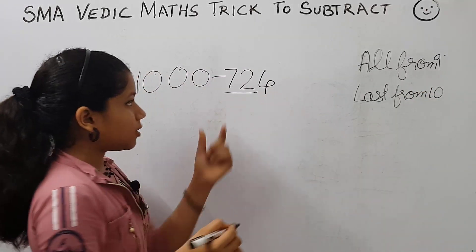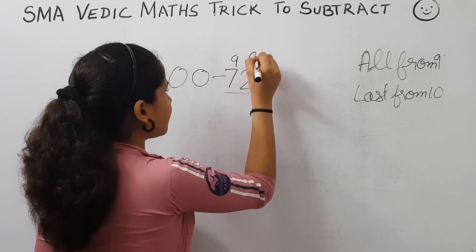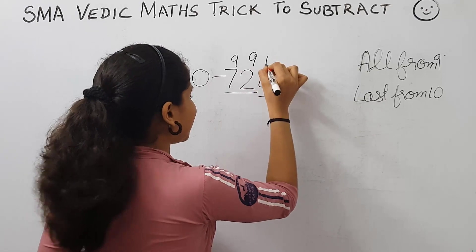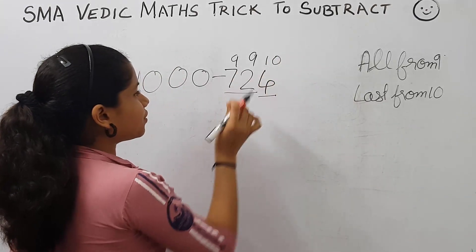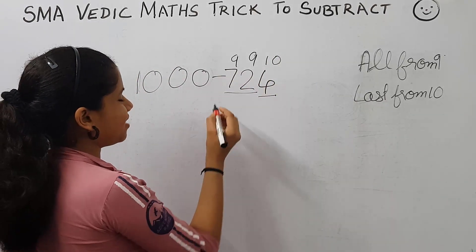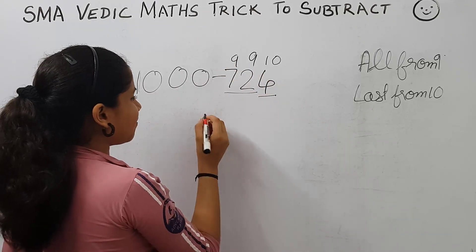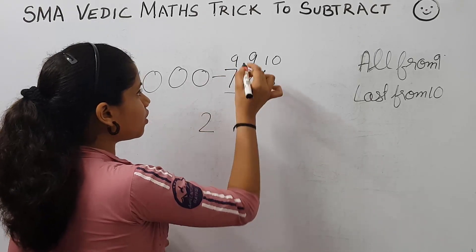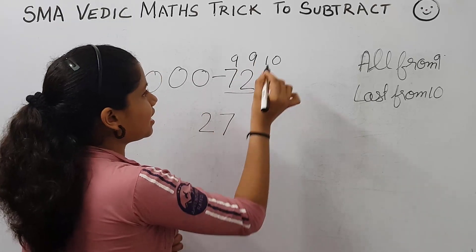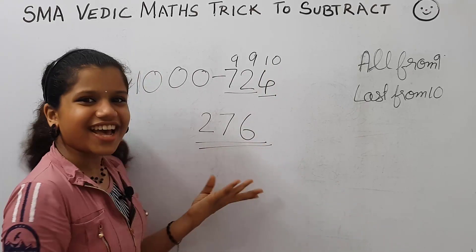These digits are to be subtracted from 9, and the last digit from 10. To get the answer: 9 minus 7 is 2, 9 minus 2 is 7, and 10 minus 4 is 6. So the answer is 276.